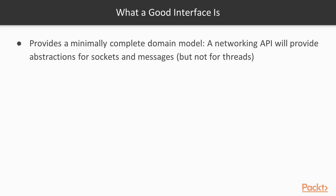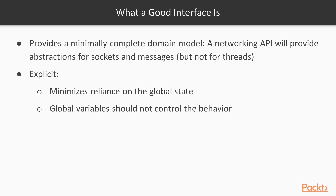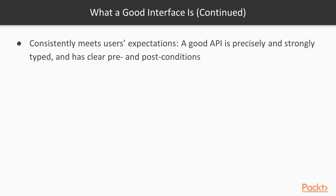Also, a good API is explicit, and as much information about internals as you need to know is visible through the interface. A good API meets users' expectations — that means it's consistent, it's precisely and strongly typed; that is, you're not using void pointers to pass data. And also, a good interface clearly describes what the available states are and what are the allowed pre and post conditions for every function call.